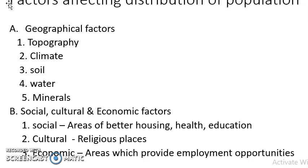Next important factor which affects the distribution of population is social, cultural, and economic factors. The first is social factor — areas of better housing, education, and health facilities are available. Such areas people prefer to live. For example, metropolitan cities, towns and cities, people prefer to live there rather than in forest areas.